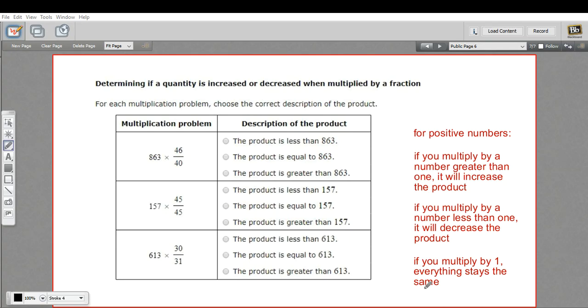Because multiplying by one doesn't really do anything. So what we need to do here is look and see, is the fraction equal to one, or less than one, or greater than one? We do that by comparing the numerator and the denominator. If the numerator is bigger than the denominator, as is the case here, 46 is bigger than 40, this is greater than one. And that means the result here, 863 times this fraction, is going to be greater than 863, because we're multiplying it by something greater than one. So we would check the product is greater than 863.